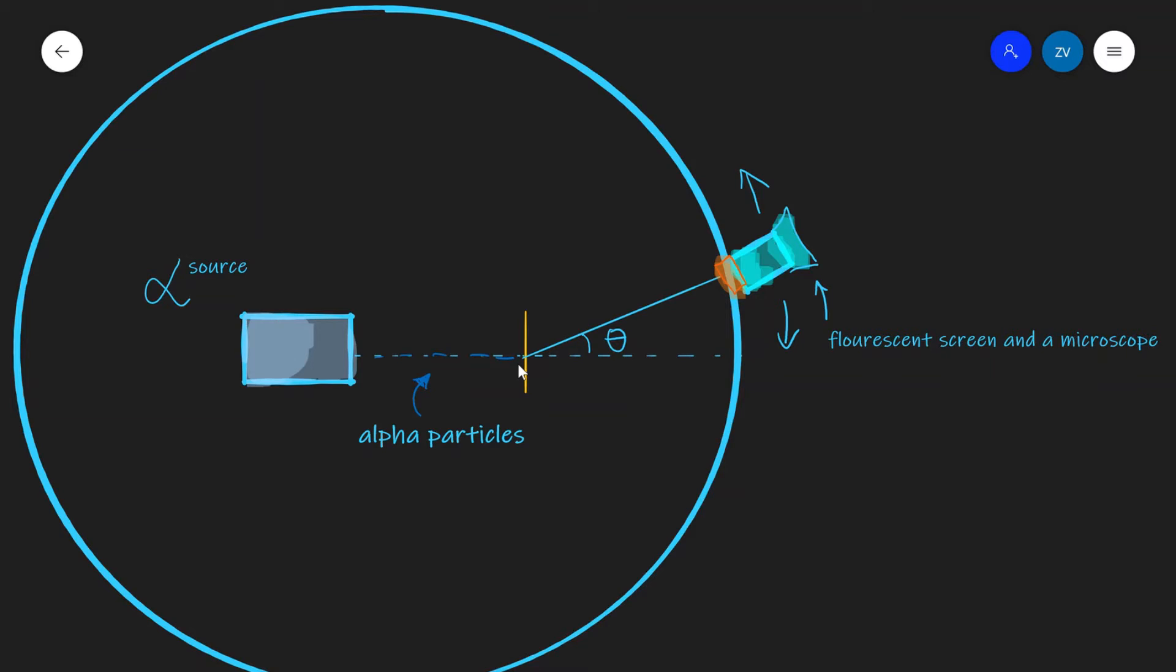And if JJ Thompson's model was correct, all of the alpha particles should be passing straight through. What Rutherford did was essentially do this experiment by moving the detector at an angle theta. Let's see what did Rutherford actually discover.